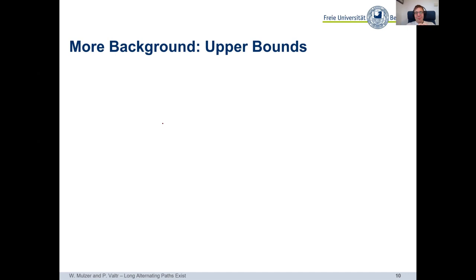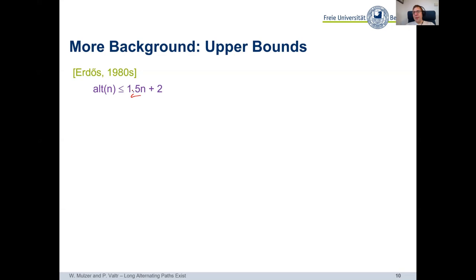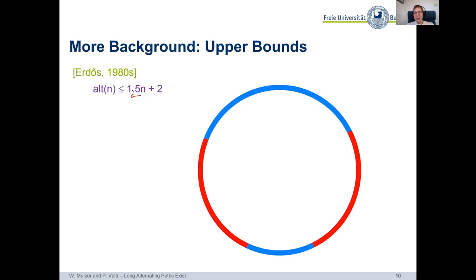Let's talk about upper bounds. Erdős studied this problem in the 1980s and not only proved the n lower bound but also gave an upper bound. He showed that for infinitely many n, there exists a coloring such that you cannot find an alternating path of length longer than (3/2)n + 2. So you cannot collect all the points, and there exist colorings where you must omit at least one quarter of all input points.